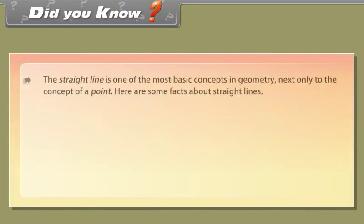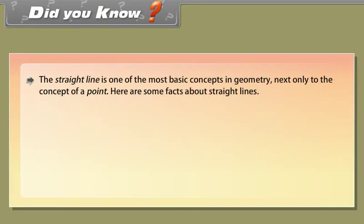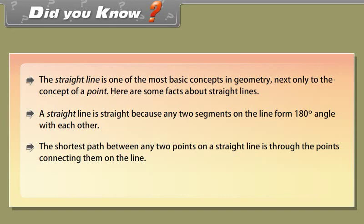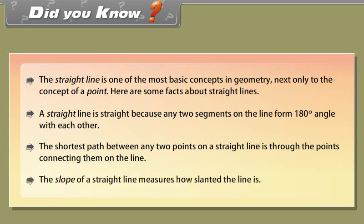Did you know? The straight line is one of the most basic concepts in geometry, next only to the concept of a point. A straight line is straight because any two segments on the line form a 180-degree angle with each other. The shortest path between any two points on a straight line is through the points connecting them on the line. The slope of a straight line measures how slanted the line is.